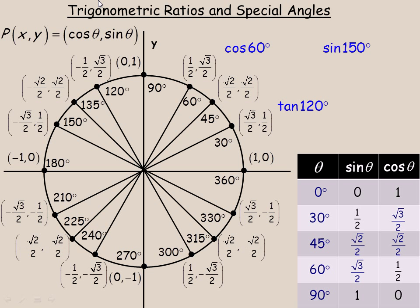In this lesson, we're going to take a look at trigonometric ratios and what are called the special angles. The special angles in the first quadrant are 0 degrees, 30 degrees, 45, 60, and 90 degrees.